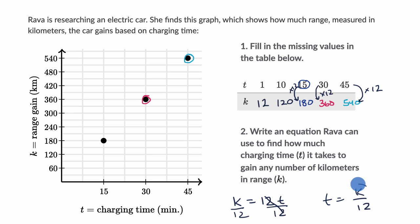And notice you could put any number of kilometers of range in here, and you're essentially just going to divide it by 12, and that will give you how much charging time. And I guess this would assume an infinitely large battery, which we know doesn't exist, but for the sake of this problem, here we have it. Here is the equation Rava can use.